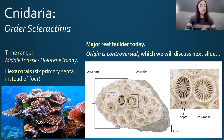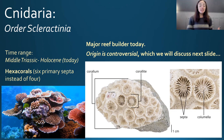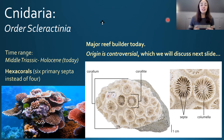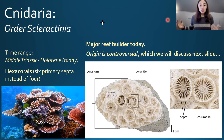The last order of subclass zoantharia is scleractinia. Unlike the tabulate and rugose corals, scleractinians didn't die out in the Permian — in fact, they weren't even around yet. Tabulate and rugose corals evolved in the Ordovician and went extinct at the Permian. Scleractinians didn't appear until the middle Triassic, after a hiatus of coral reef-forming structures in the early Triassic. This makes their origin very controversial.